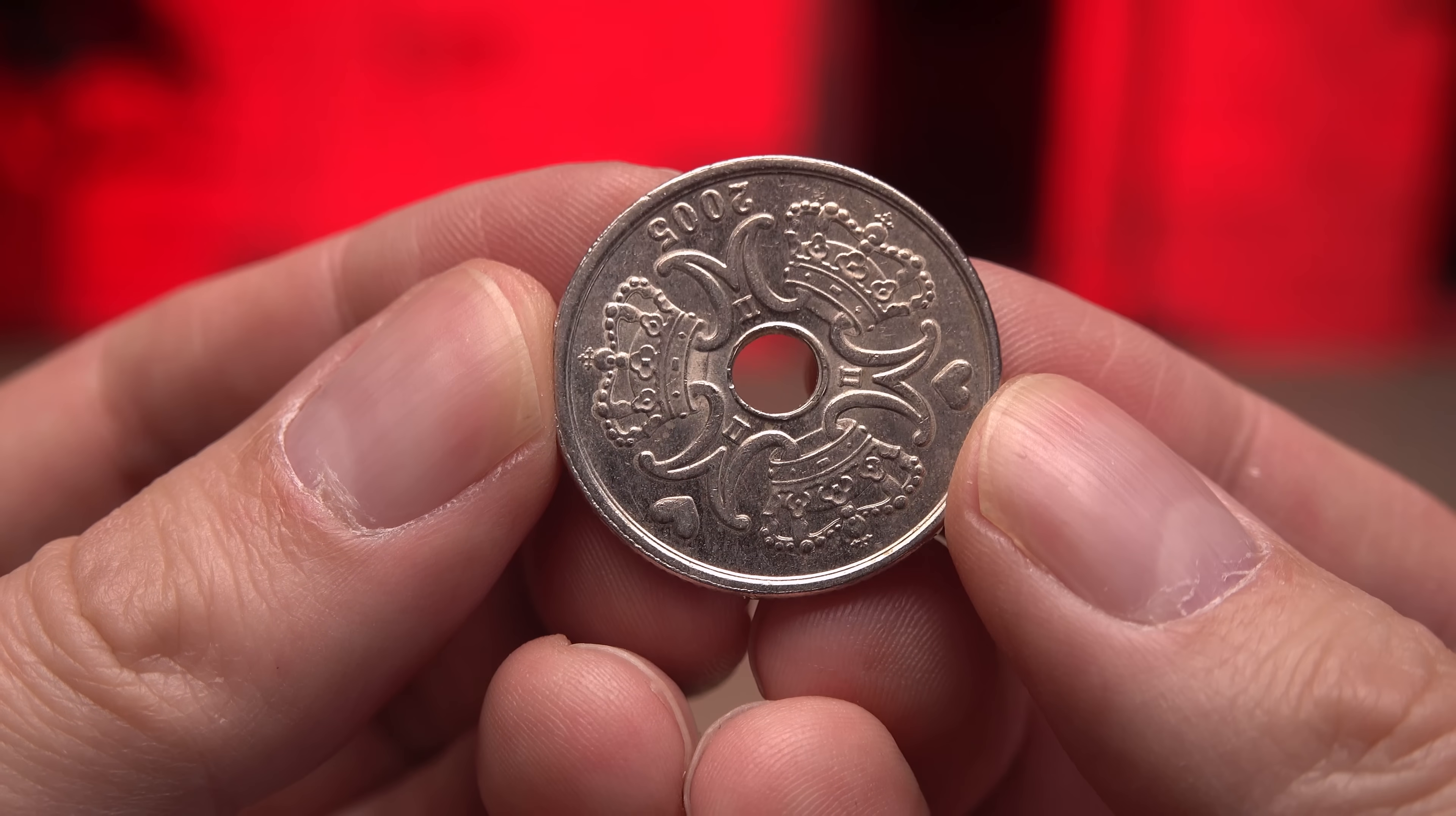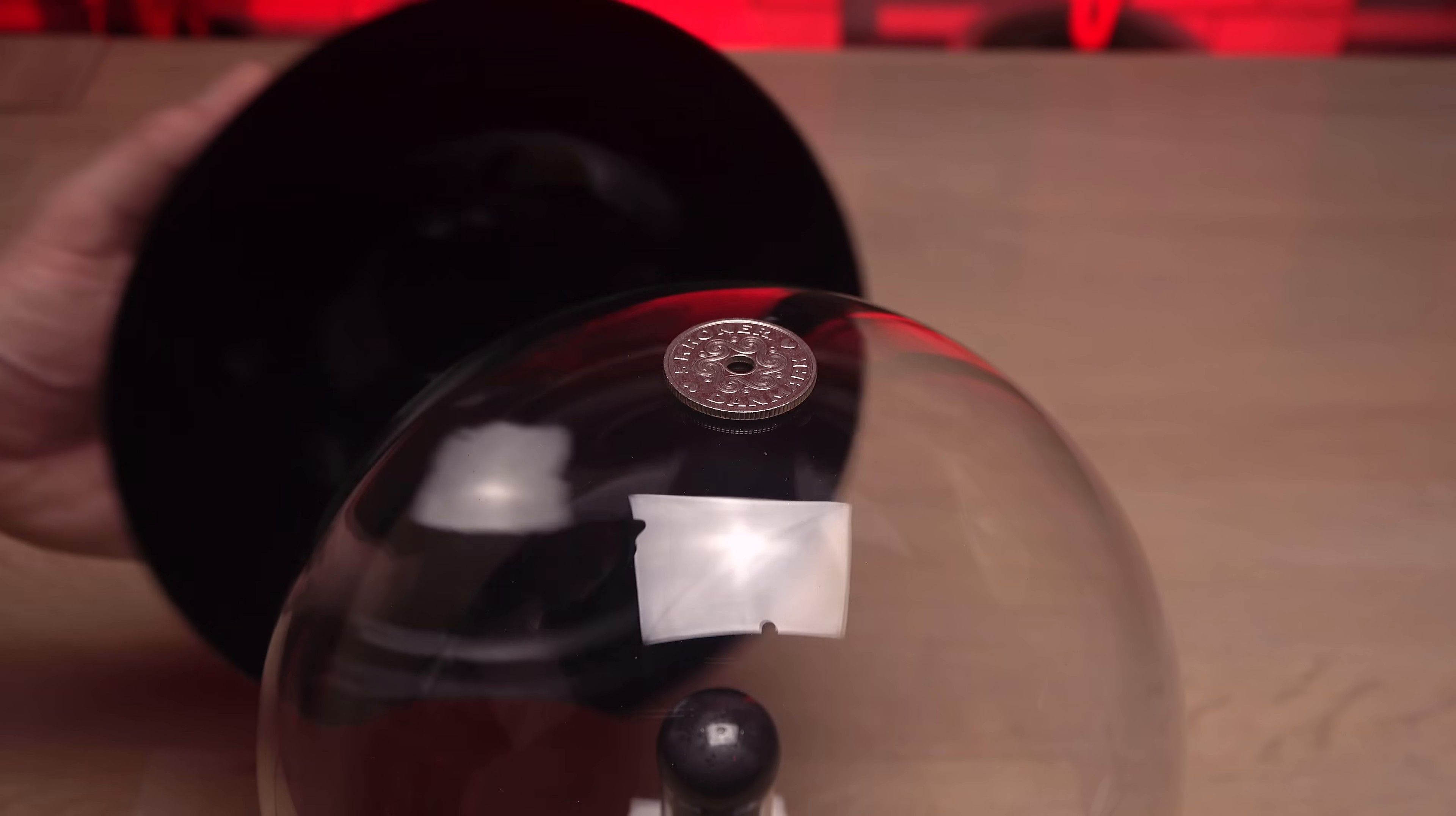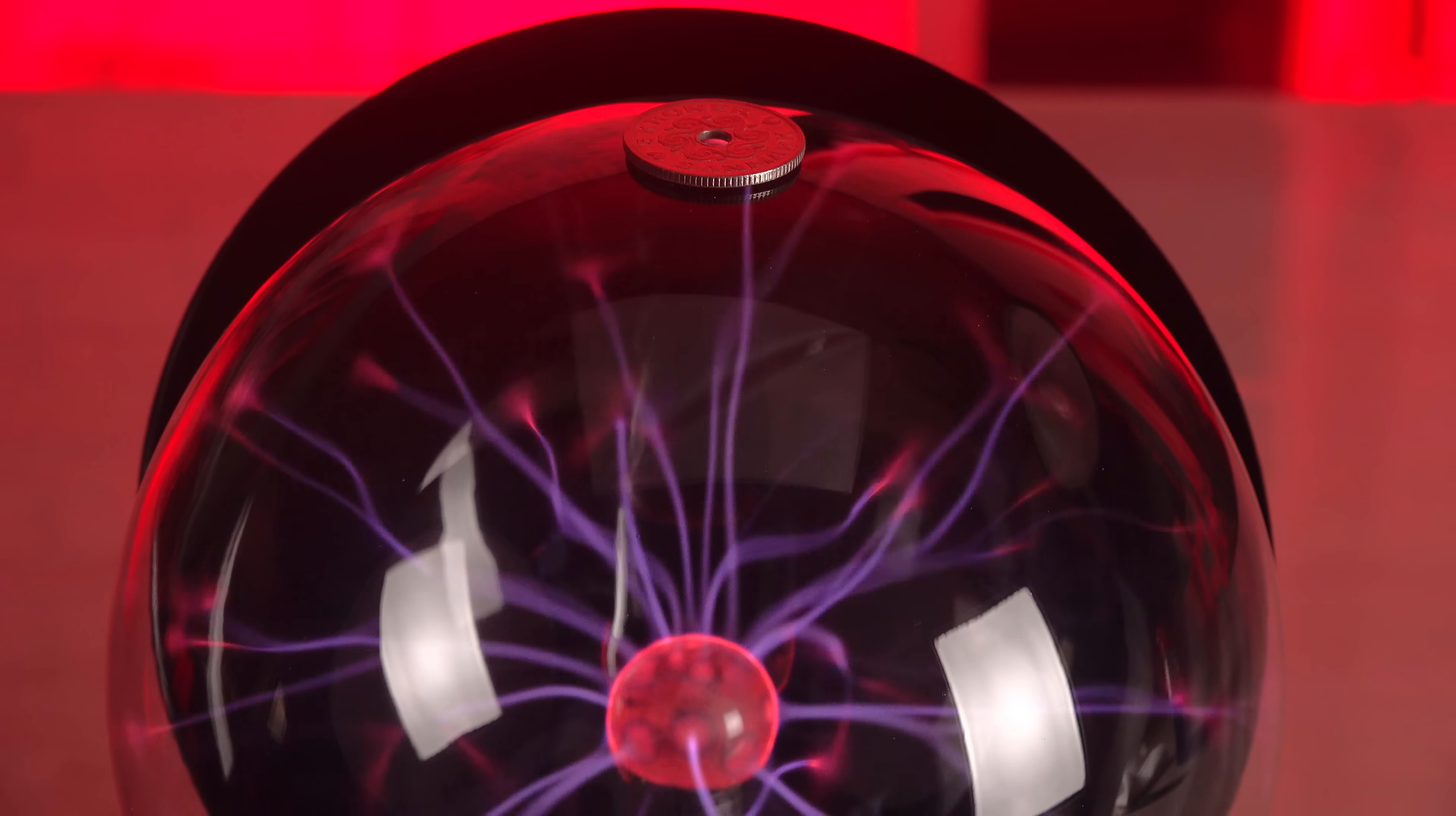Maybe a piece of conductive metal like this Danish coin will enhance any effect. With a hole in the middle, it is easier to balance on top of the glass and the hole also spreads the load to a ring shape instead of a sharp point shape on the fragile glass. And with a black background as contrast, the filaments are more visible. Will the conductive metal coin attract the filaments better than me? No. The coin is ignored by the electric filaments.